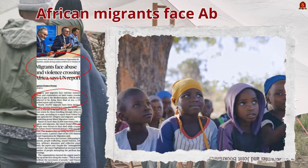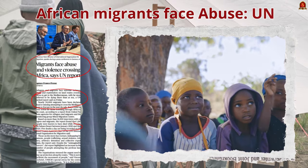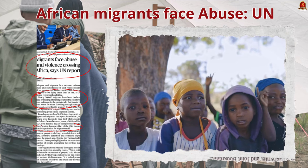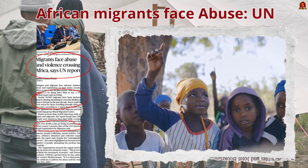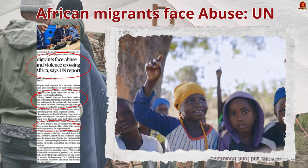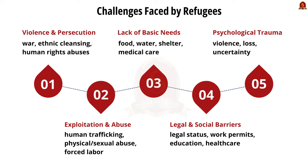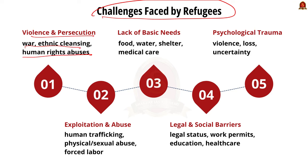According to the International Organization for Migration, an average of 5 people are dying on the desert routes daily. The challenges faced by refugees include violence and persecution — refugees flee due to war, ethnic cleansing, political persecution, and human rights abuse, and cannot return to their country. Second, many refugees suffer from lack of basic needs such as food, water, shelter, and access to medical care.